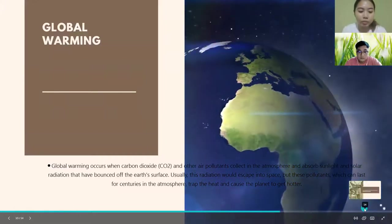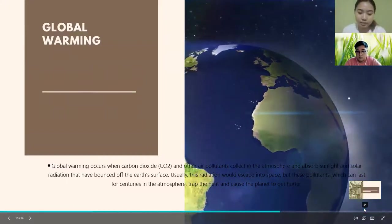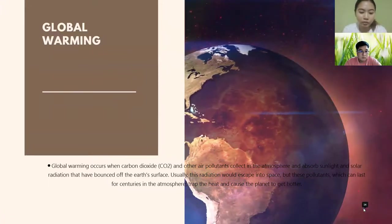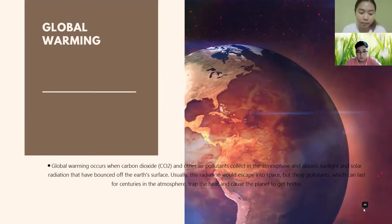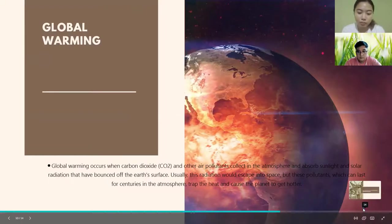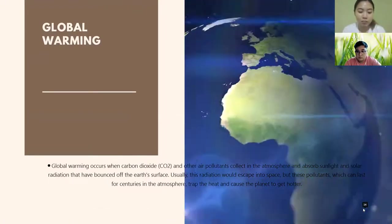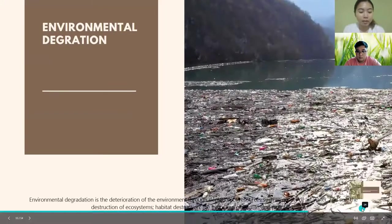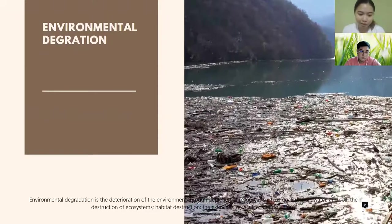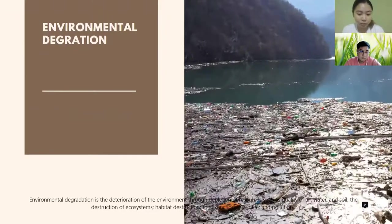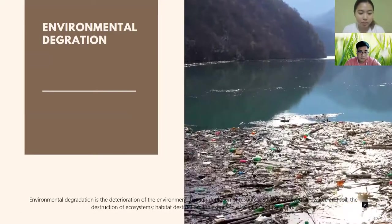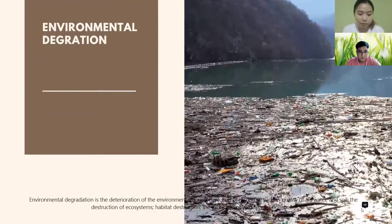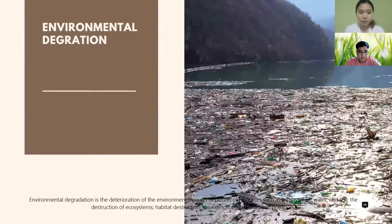Global warming occurs when carbon dioxide and other air pollutants collect in the atmosphere and absorb sunlight and solar radiation that bounces off the earth's surface. Usually this radiation would escape into space, but these pollutants — which can last for centuries in the atmosphere — trap the heat and cause the planet to get hotter. Environmental degradation is the deterioration of the environment through depletion of resources such as air, water, and soil quality, the destruction of ecosystems, habitat destruction, the extinction of wildlife, and pollution.